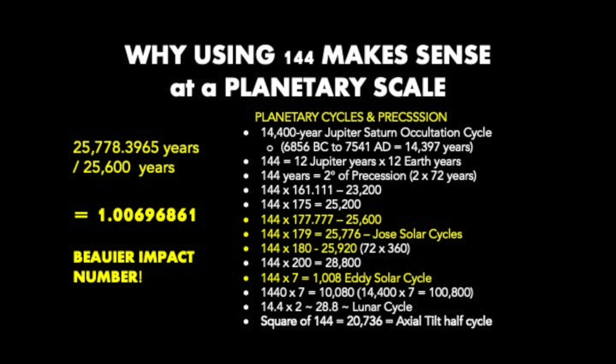You can see 144 shows up here again in a lot of ways. 25,776 is one of the numbers that I use for the precessional cycle. It's generally given as 25,771.5, but 776 has a lot of power to it and factorial capability. And if you add 144 to 25,776, you do get the 25,920 number, which is what most people consider the great precessional year to be.